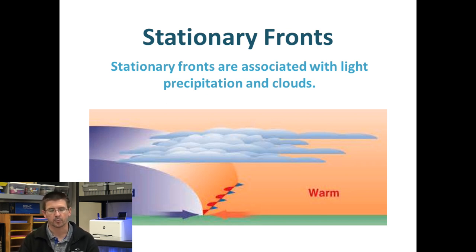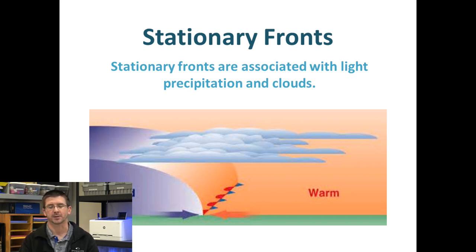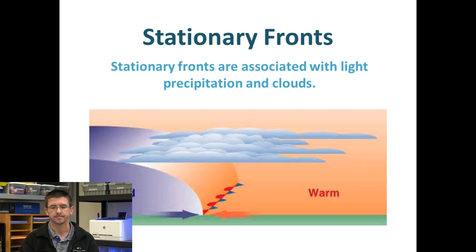Because of that, we won't get heavy precipitation, but we do get extended periods of precipitation. Meaning, if a stationary front is over an area, it might stay there for two or three days, dropping a great deal of rain over time.